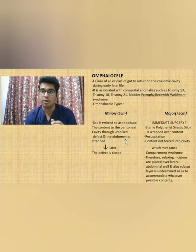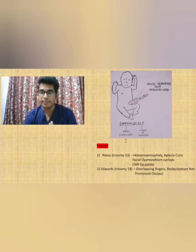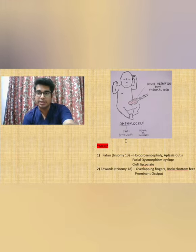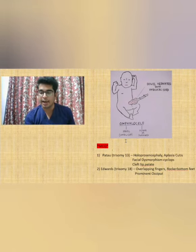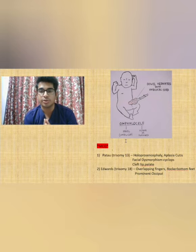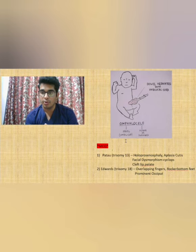These are the key points related to Omphalocele. Here is another diagram of Omphalocele — you can see the intestinal loops herniated into the umbilical cord. You can pause this video and look up actual images of Omphalocele for a better idea.